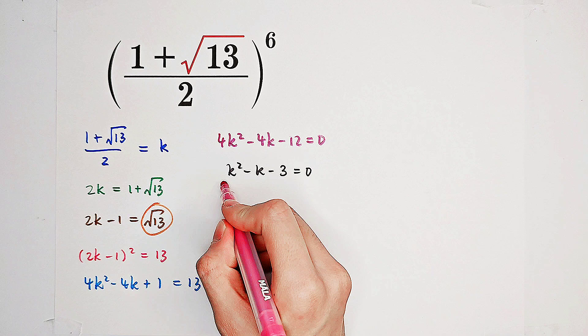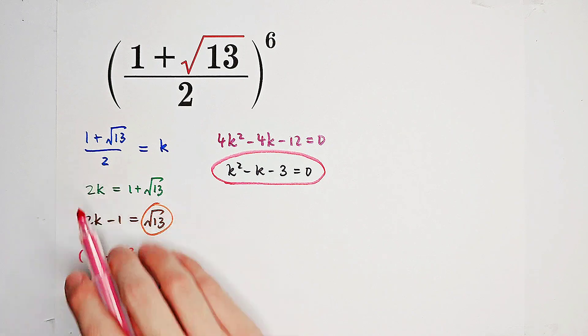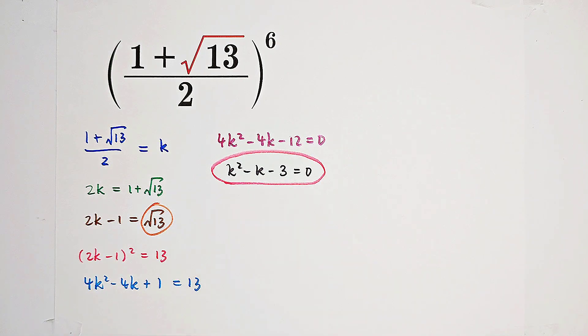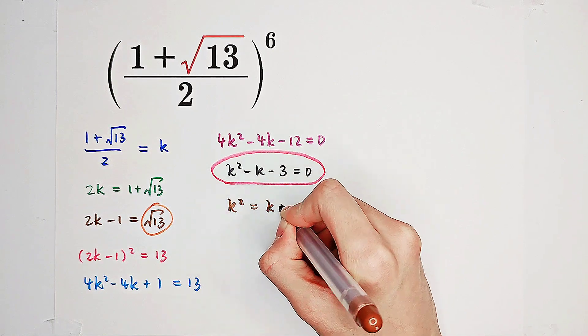This is a simple equation about k. And 1 plus square root of 13 over 2 is just the root of it. Now look, k squared is just k plus 3.